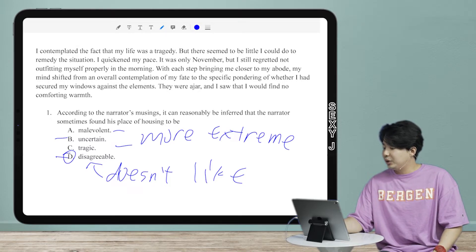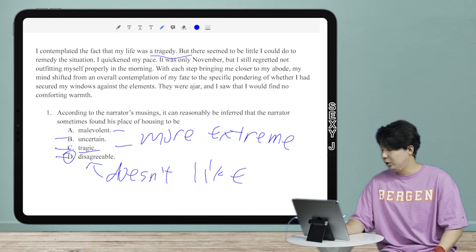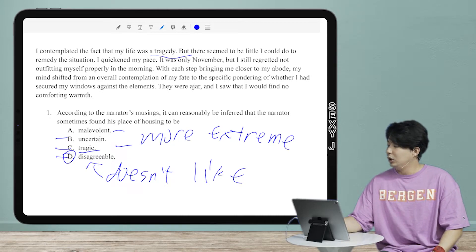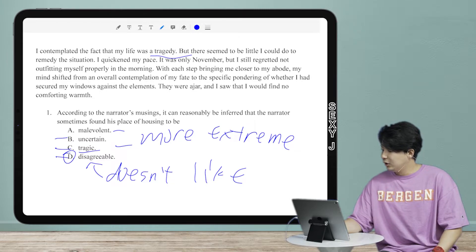So first trap answer here. You see here, I contemplated life was a tragedy. So we have the word tragedy. So that's the trap here with the word tragic. Or we have here that, let's see, we have malevolent. That's a trap because...